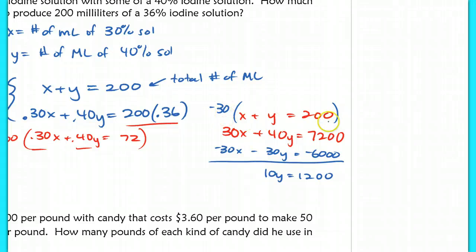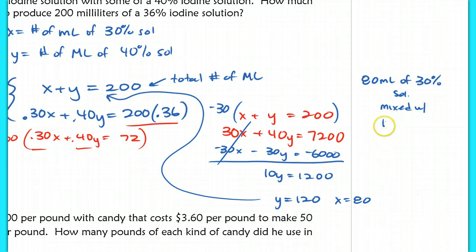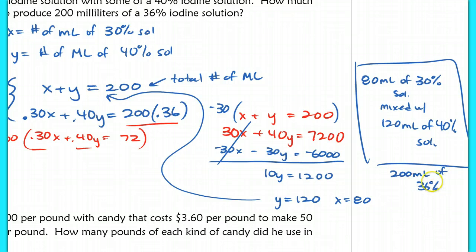And now we're just going to use elimination here to solve. When I multiply negative 30 throughout the top equation here, I end up in this bottom equation. And if I cancel out the x's, I'm left with 10y equaling 1,200. If I divide out that 10, I end up with y equaling 120. And if I go back to my original equation here, I know that if y equals 120, that x must be 80. So that means that you have 80 milliliters of the 30% solution mixed with 120 milliliters of the 40% solution. And that is how he ends up with the 200 milliliters total of 36% iodine solution.